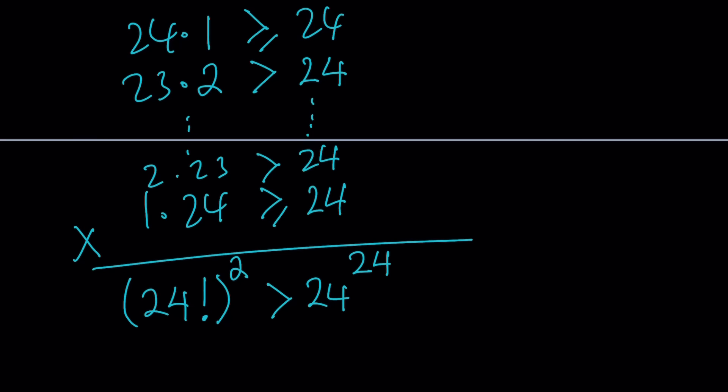We found the larger number, which is 24 factorial squared. If it's not squared, it's less than 24 to the 24, but when it's squared, it's going to get much larger. I'm going to show you the numerical values in a little bit.